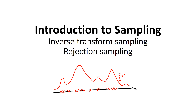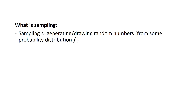The second part is about rejection sampling itself, and the last part is about implementing rejection sampling in Python — something to be excited about. So let's get to it. Sampling is basically generating, simulating, or drawing random numbers from some probability distribution F.